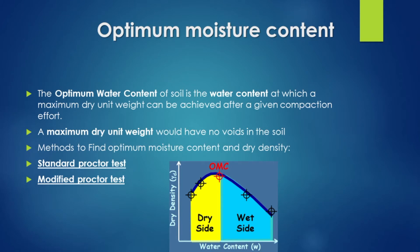Next, you should know the maximum dry density. The maximum dry density does not have just one fixed size. You can use the water content curve to determine the maximum dry density.